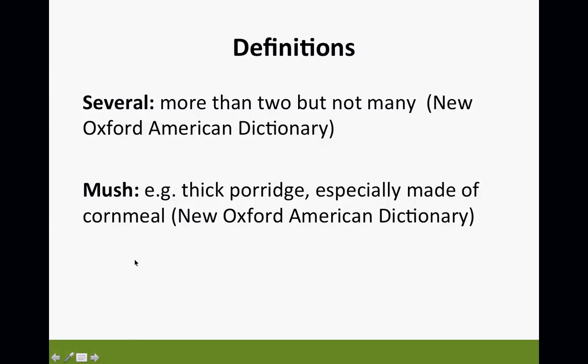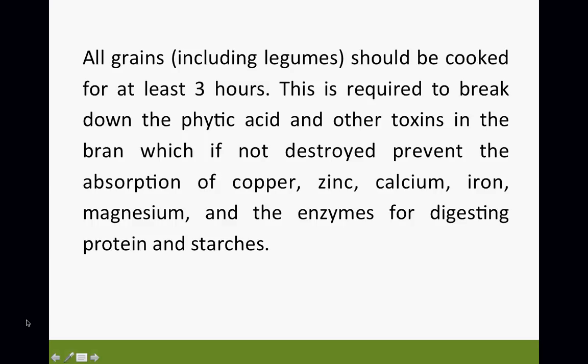Today you look and see folks saying cornmeal porridge is cooking in just 5 to 10 minutes. How can you cook the hardest grain known to man in 5 to 10 minutes, when technically speaking that grain should be allowed to cook anywhere between maybe 5 to 7 hours? You wonder why so many deficiencies are taking place today. It goes back to proper preparation.